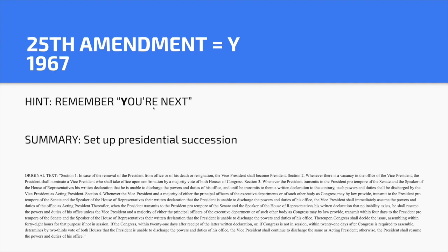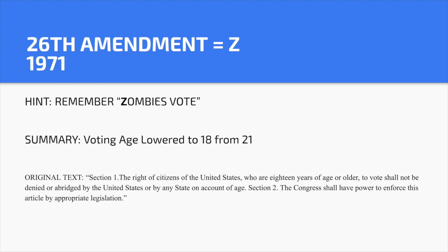Twenty-fifth Amendment — Y. Hint: 'You're next.' It set presidential succession — who becomes president when the president dies? The vice president does. And if the vice president dies, the Speaker of the House becomes president. Twenty-sixth Amendment — Z. Hint: 'Zombies vote.' The voting age was lowered from 21 to 18 in 1971. The main reason was the Vietnam War — 18-year-olds were being drafted, and many argued if 18-year-olds can serve in war, why can't they vote?